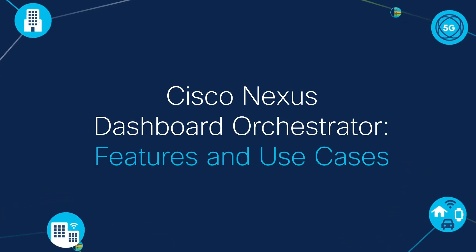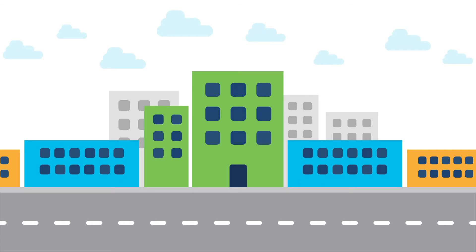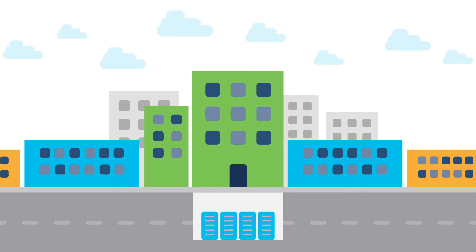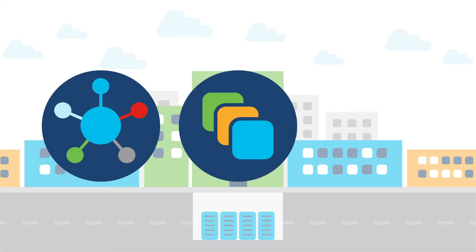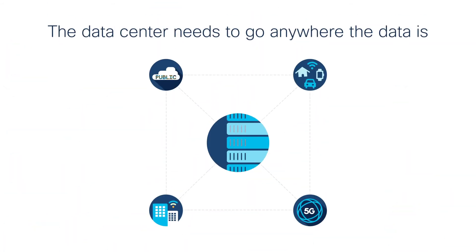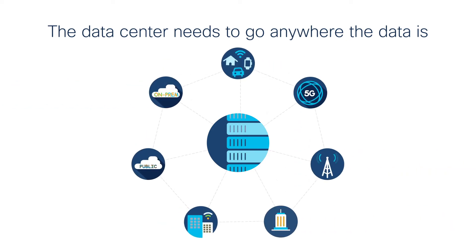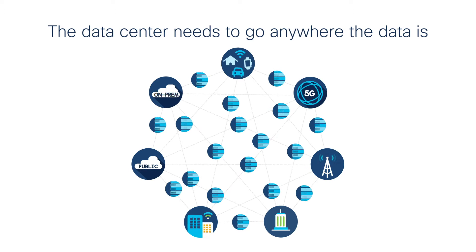Cisco Nexus Dashboard Orchestrator Features and Use Cases. In the past, most data centers sat in the basement at a company's headquarters. But today's infrastructures, apps, and work styles have changed. A modern data center needs to go anywhere the data is — whether on-premises, in the cloud, at the IoT or telco edge, and beyond. That means your operations are getting more and more distributed every single day. To keep pace, you need a way to consistently orchestrate network and segmentation policies across multiple sites and regions.